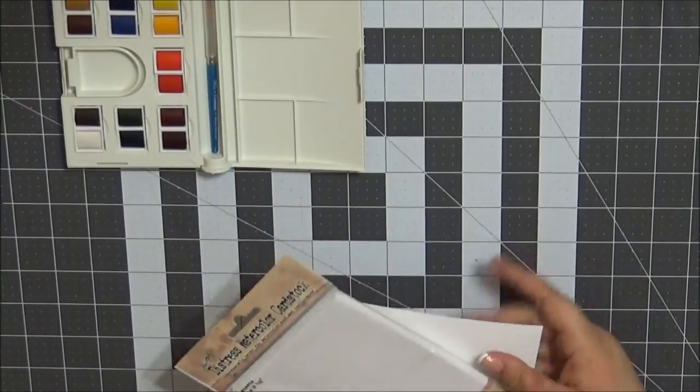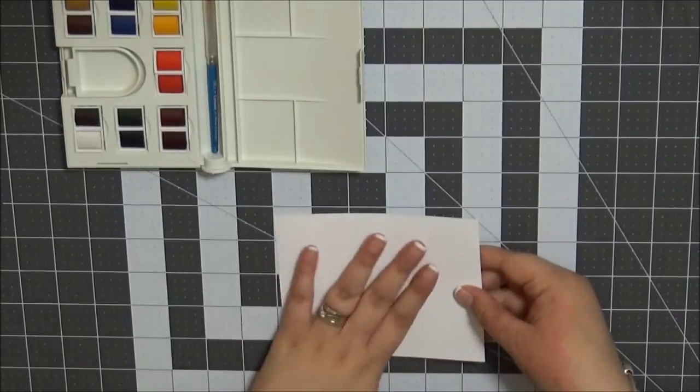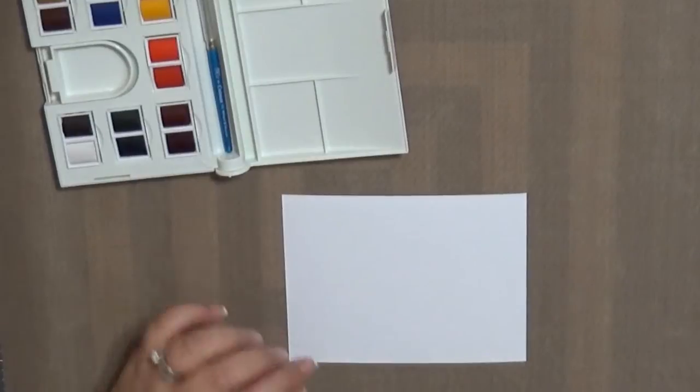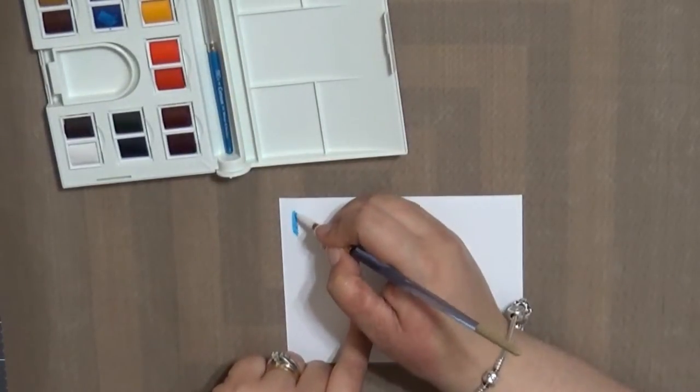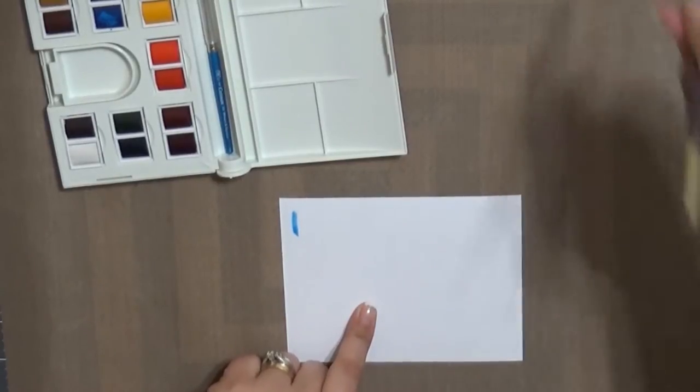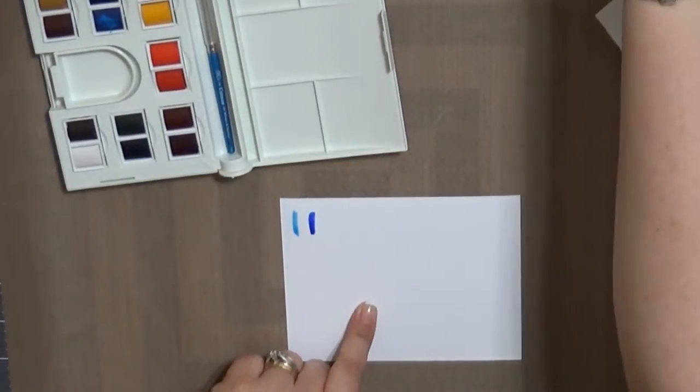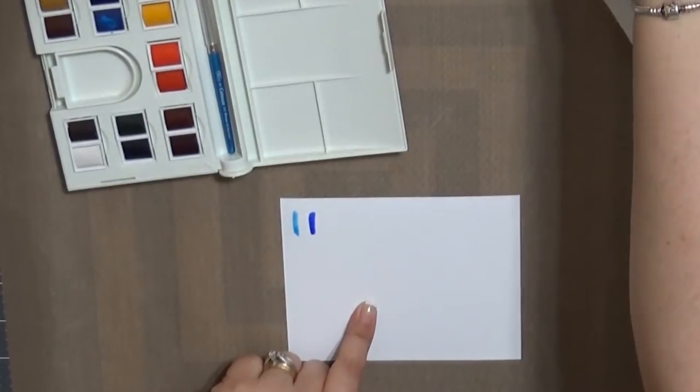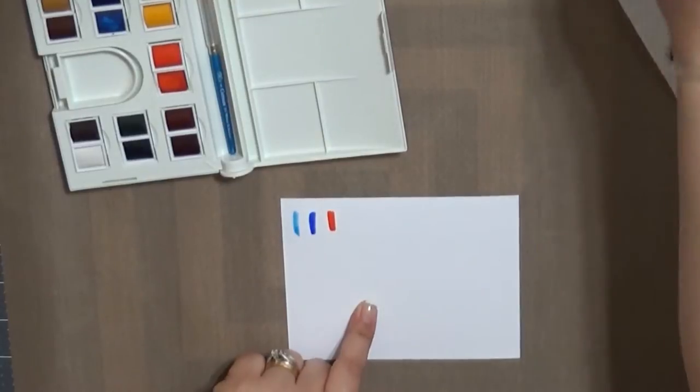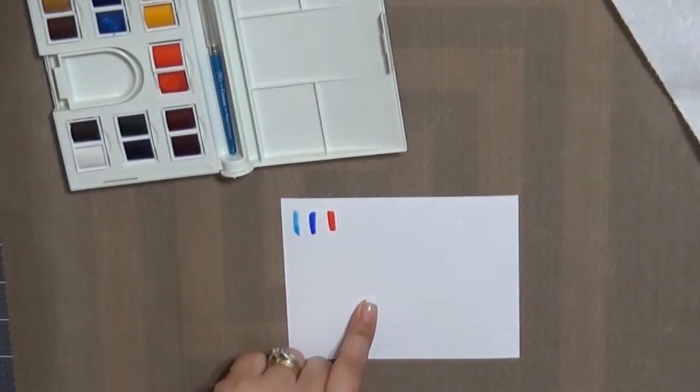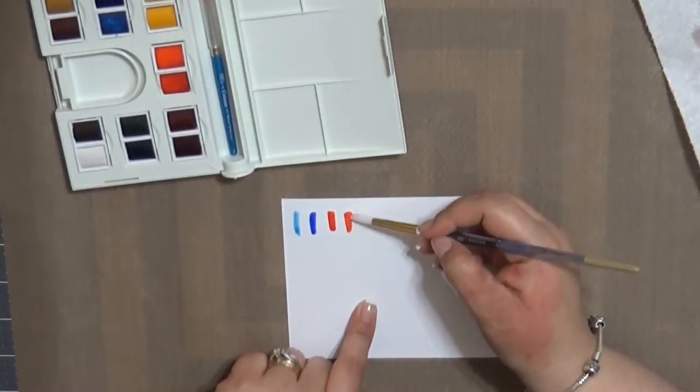So here I'm using some Tim Holtz Distress Watercolor Cardstock. One side is textured and the other side is smooth. I've laid down my Tim Holtz Craft Sheet as well, just so in case I have some watercolor spill it doesn't ruin my craft mat below. And at first when I used that blue I was really pleasantly surprised. I thought the shades would end up being a lot lighter than they were. And they actually were really, really intense. There were some good shades in there.